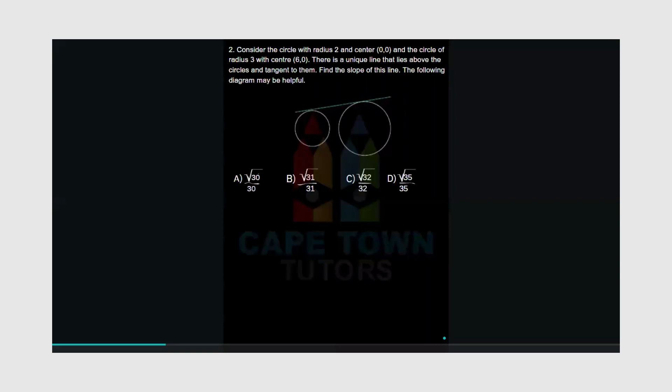The next question says, consider the circle with radius 2 and center (0, 0), and the circle of radius 3 with center (6, 0). And it says there's a unique line that lies above the circles and tangent to them. Find the slope of this line, the following diagram may be helpful.